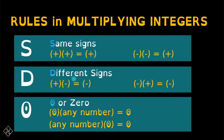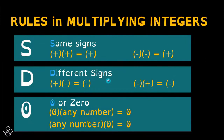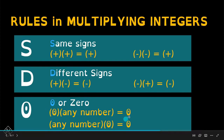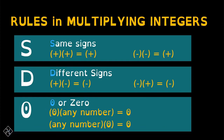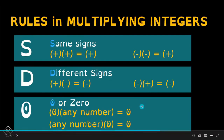Pangalawang rule, D — D stands for different sign. When you multiply two numbers with different signs, the product is negative. A positive integer multiplied by a negative integer, ang sagot ay negative. Ganon din kapag pinagbaliktad — negative times positive is also negative. So, different sign kapag pinag-multiply, palaging negative ang sagot. Lastly, the zero rule: kapag yung zero minultiply mo sa any number, or any number multiplied by zero, the answer would always be zero.